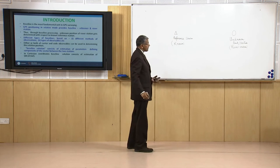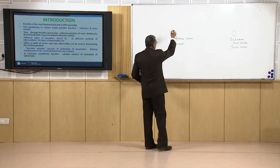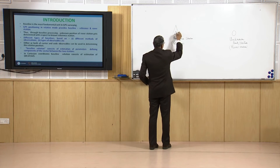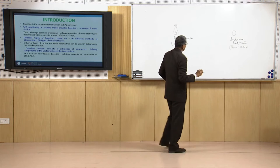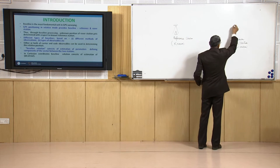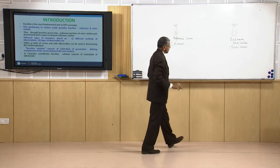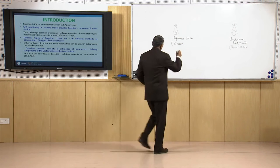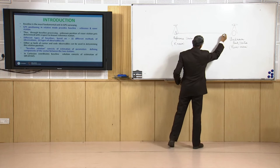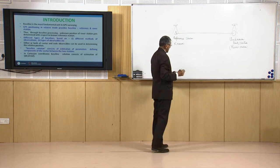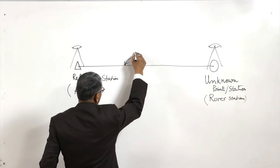In relative positioning, one station is the reference station which is known, and the other location whose position is to be determined is the unknown station, known as the rover station. We set up a GPS receiver on the reference station and another on the rover. The line joining these two stations is called the baseline.